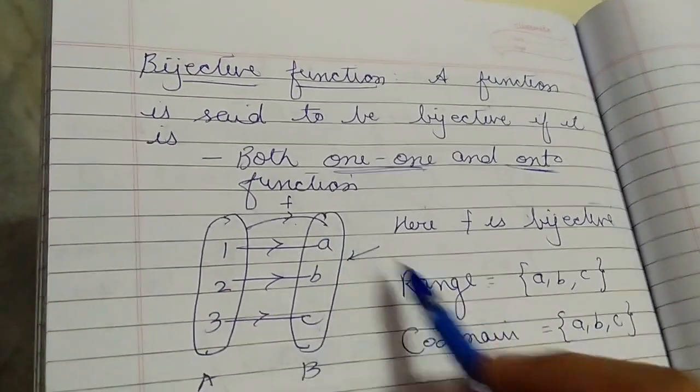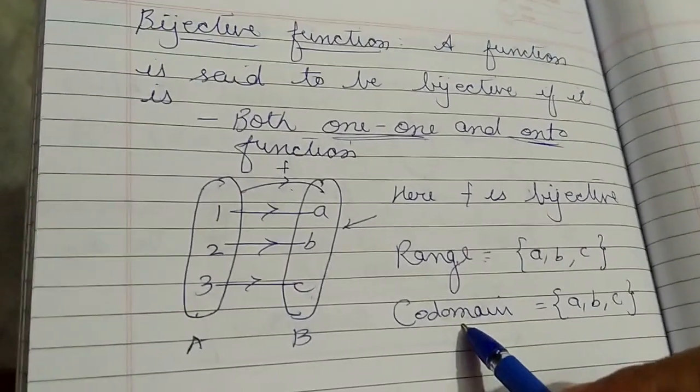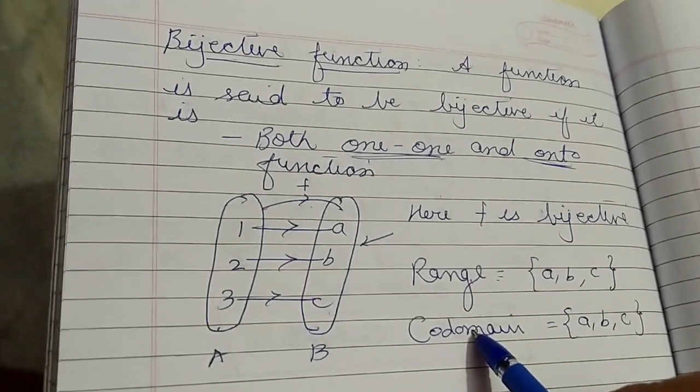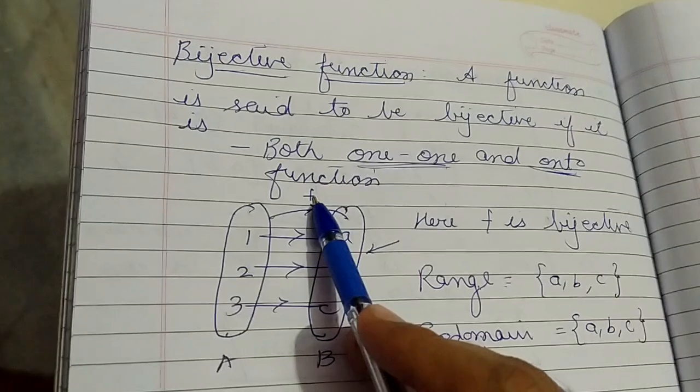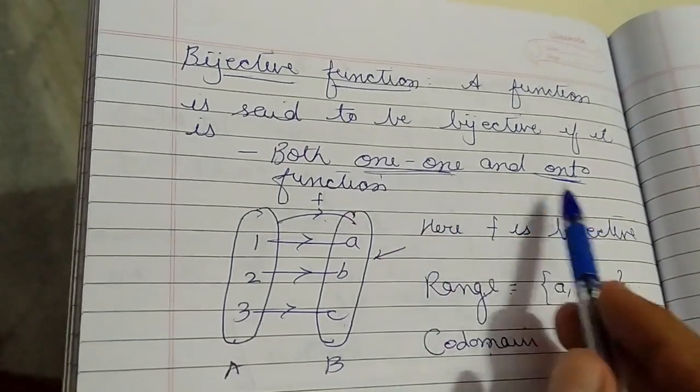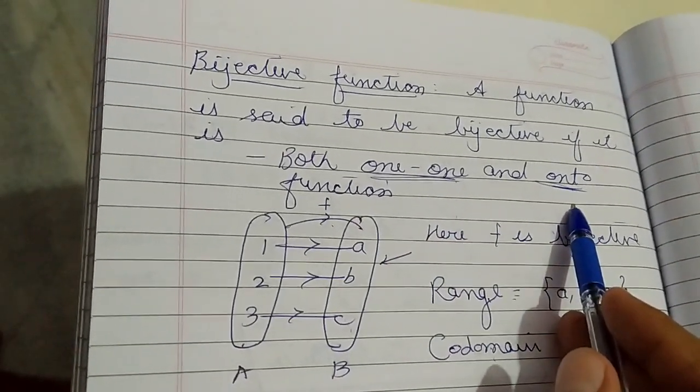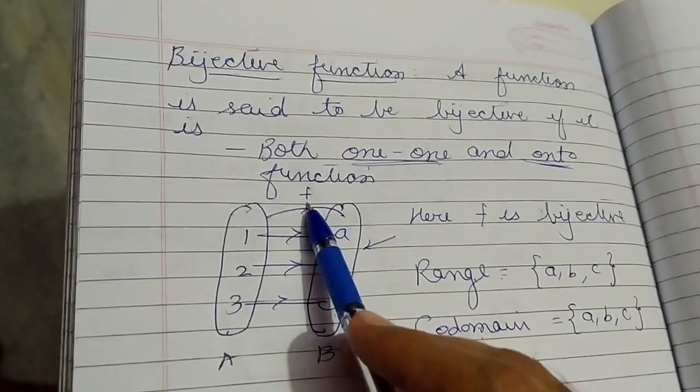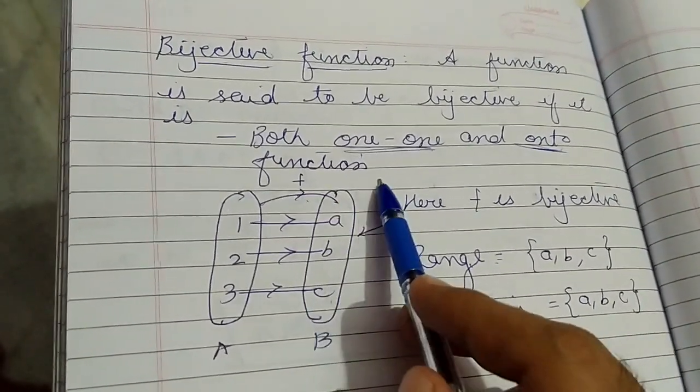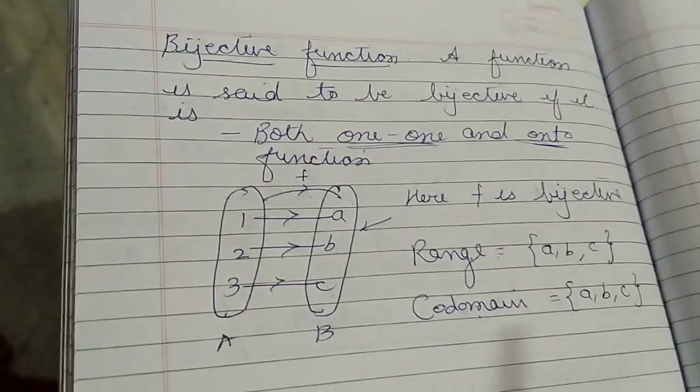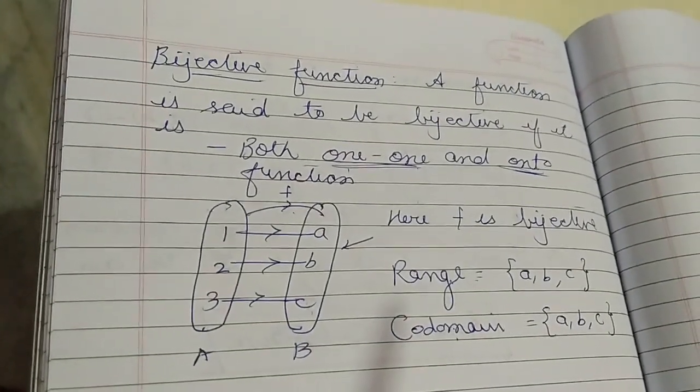For this function f, range is also equal to codomain, hence it is an onto function. And this function f now becomes one-one and onto, so we can say that this function is a bijective function, or this mapping is the mapping of a bijective function. Thank you and have a nice day.